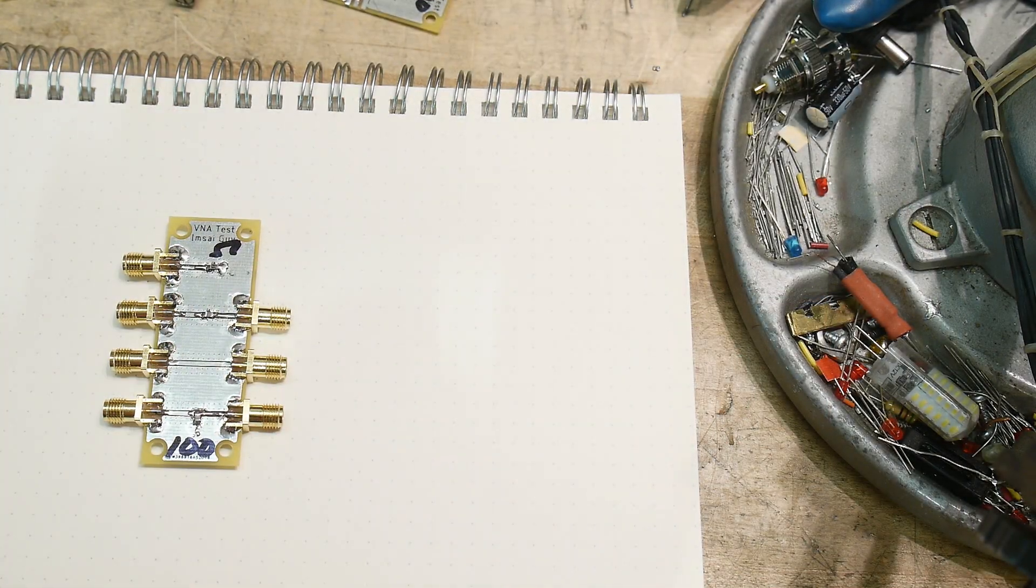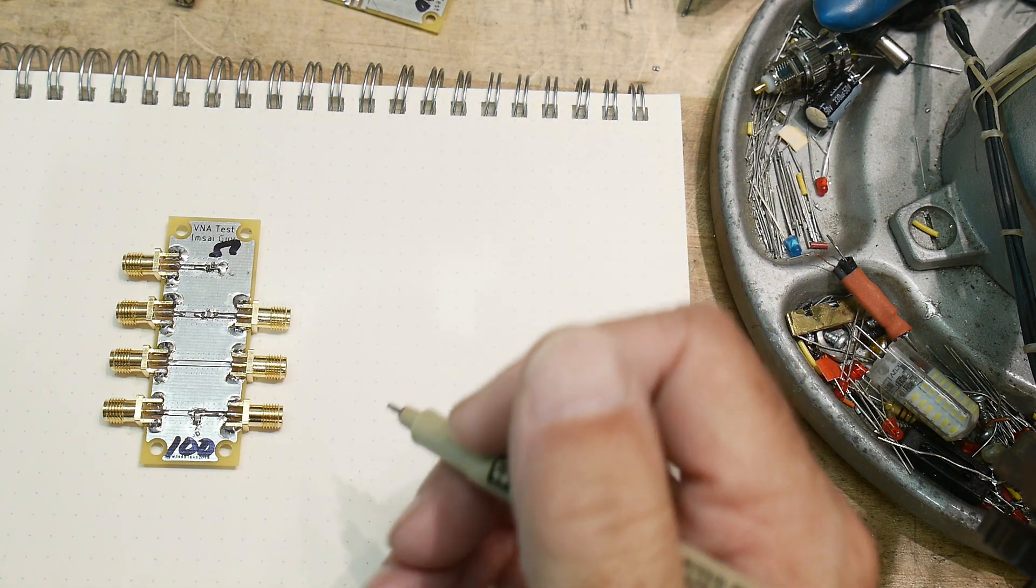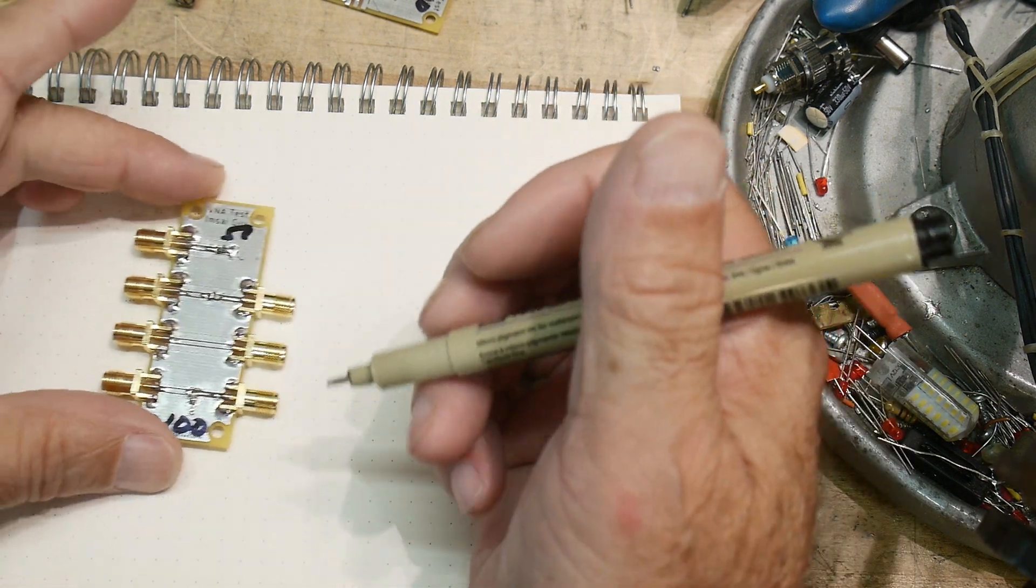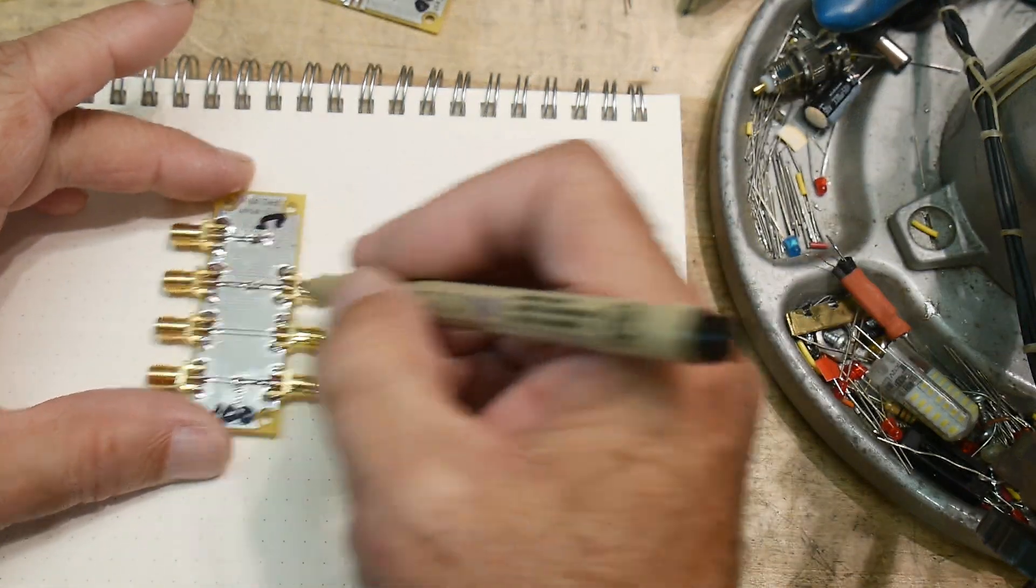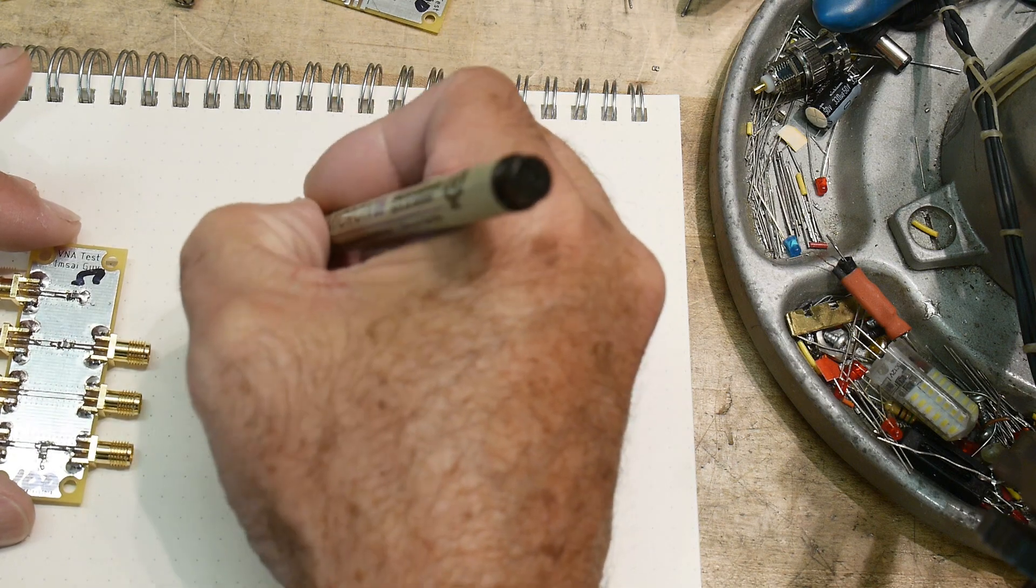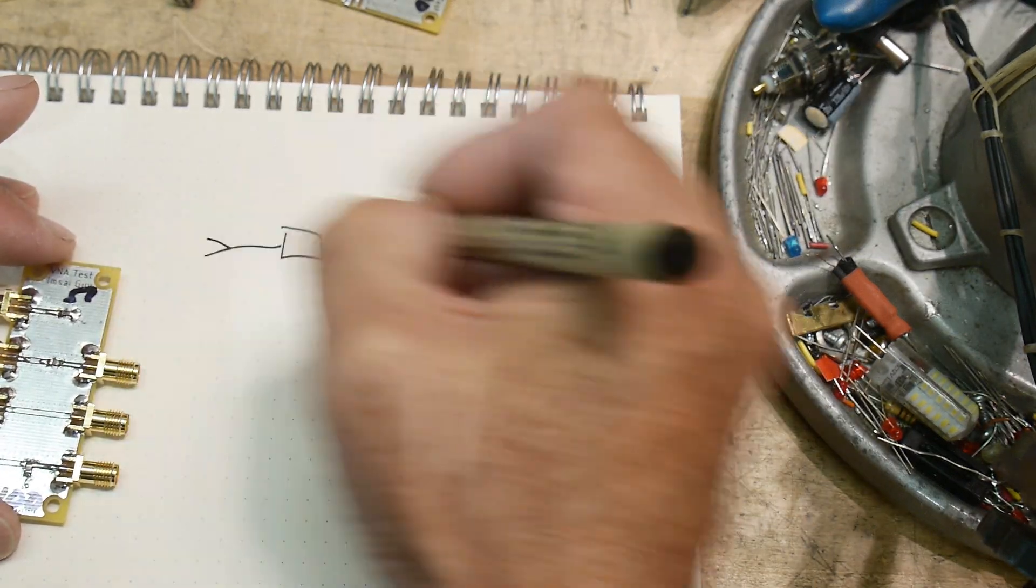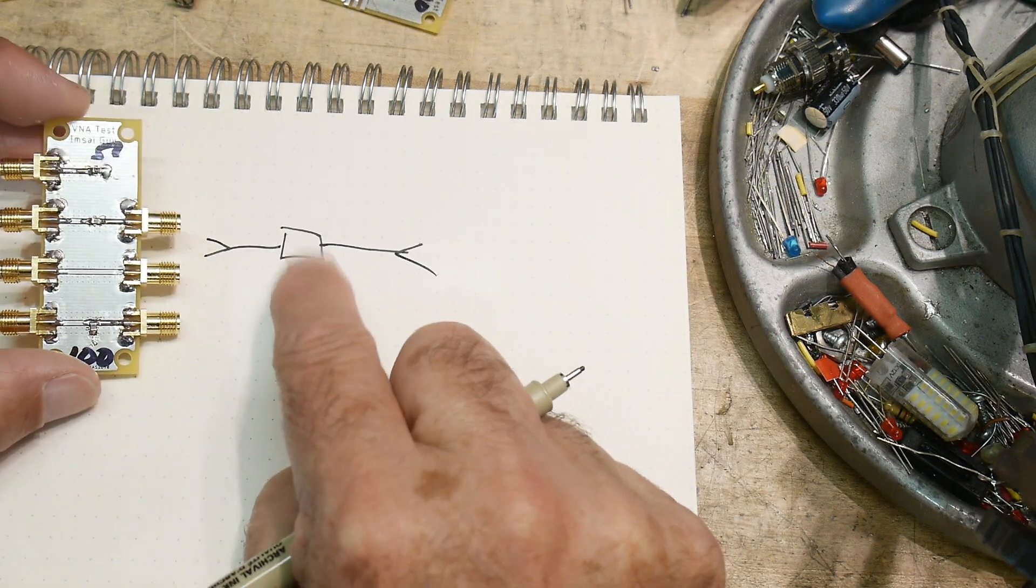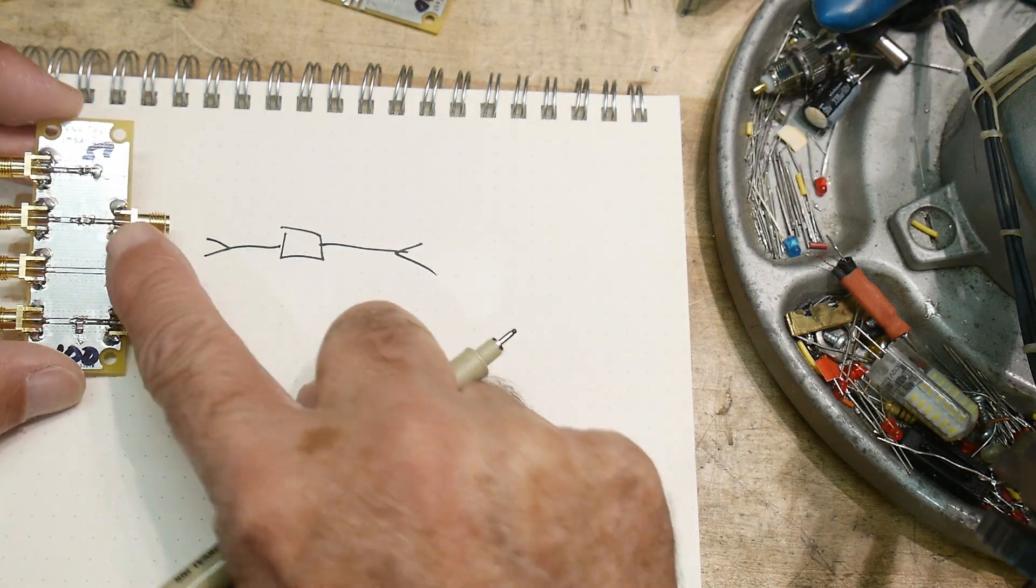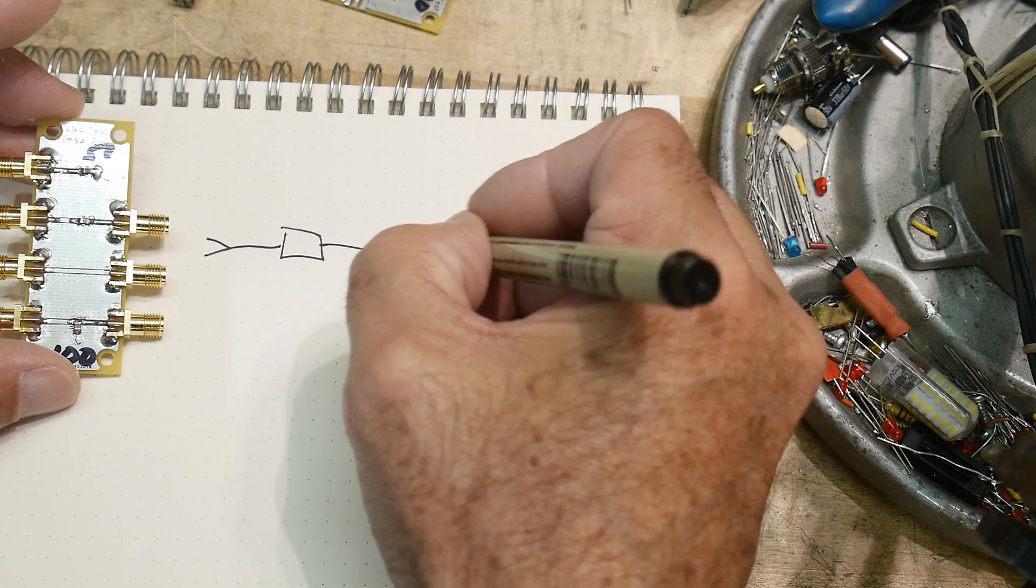Alright, I was playing around with this a little off-camera and found some interesting things. We have some type of connector and then a component in the middle, and the way I've been using it is by attaching a 50-ohm load here.